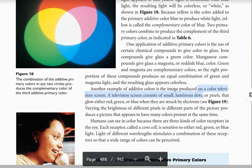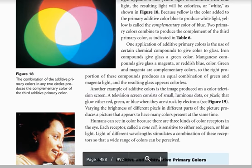Iron compounds give glass a green color. Manganese compounds give glass a magenta or reddish blue color. Green and magenta are complementary colors, so the right proportion of these compounds produces an equal combination of green and magenta lights and the resulting glass appears colorless.